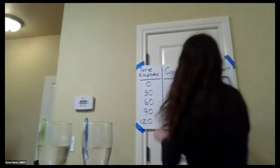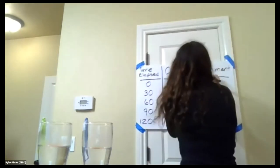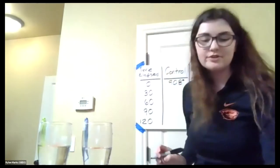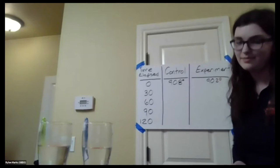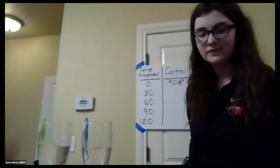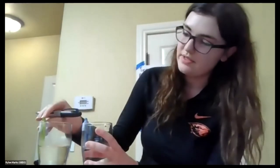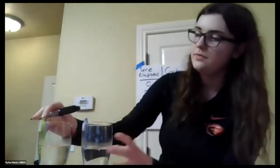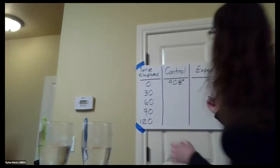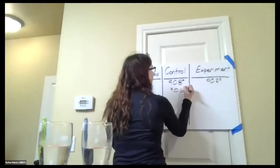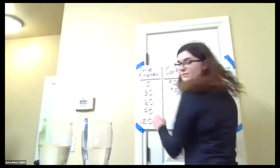All right, so our control water is at 90.8 degrees Fahrenheit. And our experimental water is at 90.2. And we're going to measure the temperature of our water every 30 seconds until we get down to 120 seconds, just so that we can compare how the water changes as time goes on. So I've set my nifty little timer up here, and we're going to keep recording our data as the experiment goes along. We're going to reset our thermometers. All right, so our control water here is at 90.6 degrees Fahrenheit, and our experimental water is at 90.2.